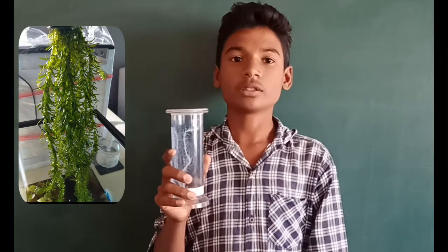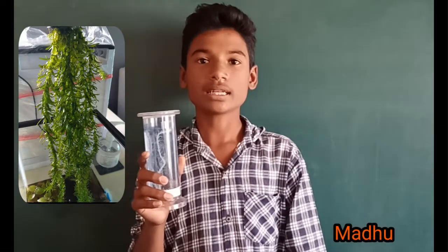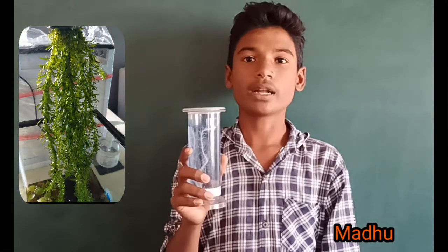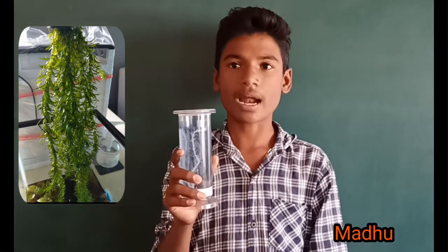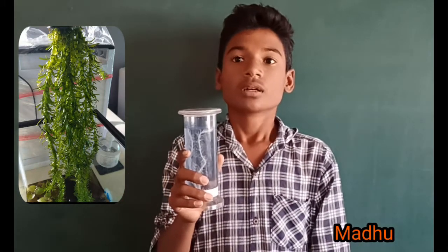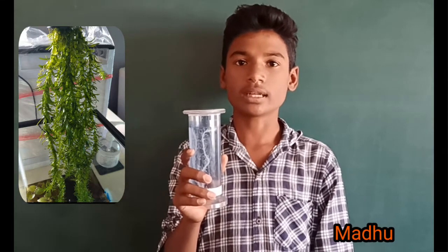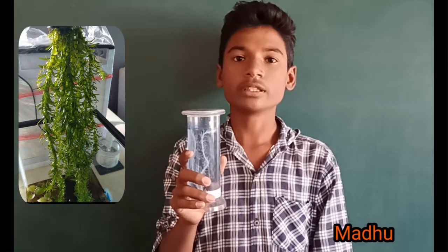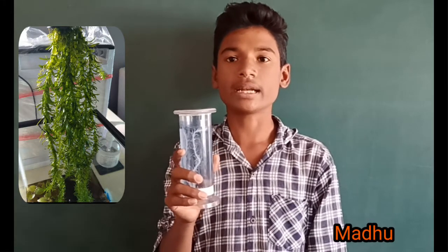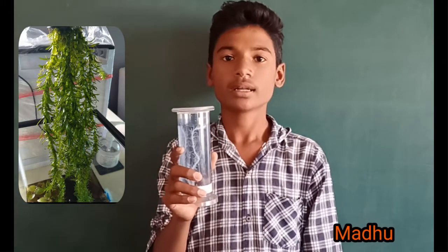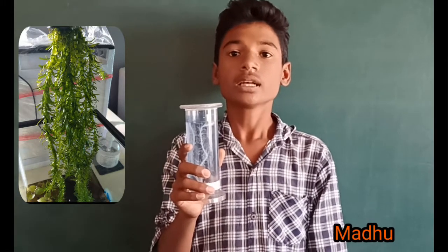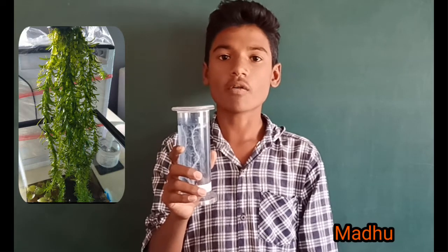Jai Gurudev. My name is Shri Matam, I am studying 9th class. I am telling about Hydrilla. Hydrilla is a plant that looks very similar to three other invasive plants: Egeria densa and Elodea canadensis. There are, however, some varied ways to tell the difference.